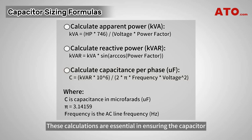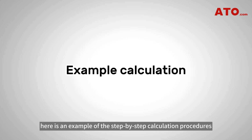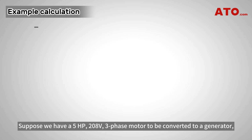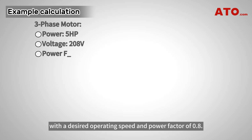These calculations are essential in ensuring the capacitor is sized correctly for the generator conversion. For a clearer understanding, here is an example of the step-by-step calculation procedures to determine the desired capacitor size based on the provided equations. Suppose we have a 5 HP, 208 volts, three-phase motor to be converted to a generator with a desired operating speed and power factor of 0.8.